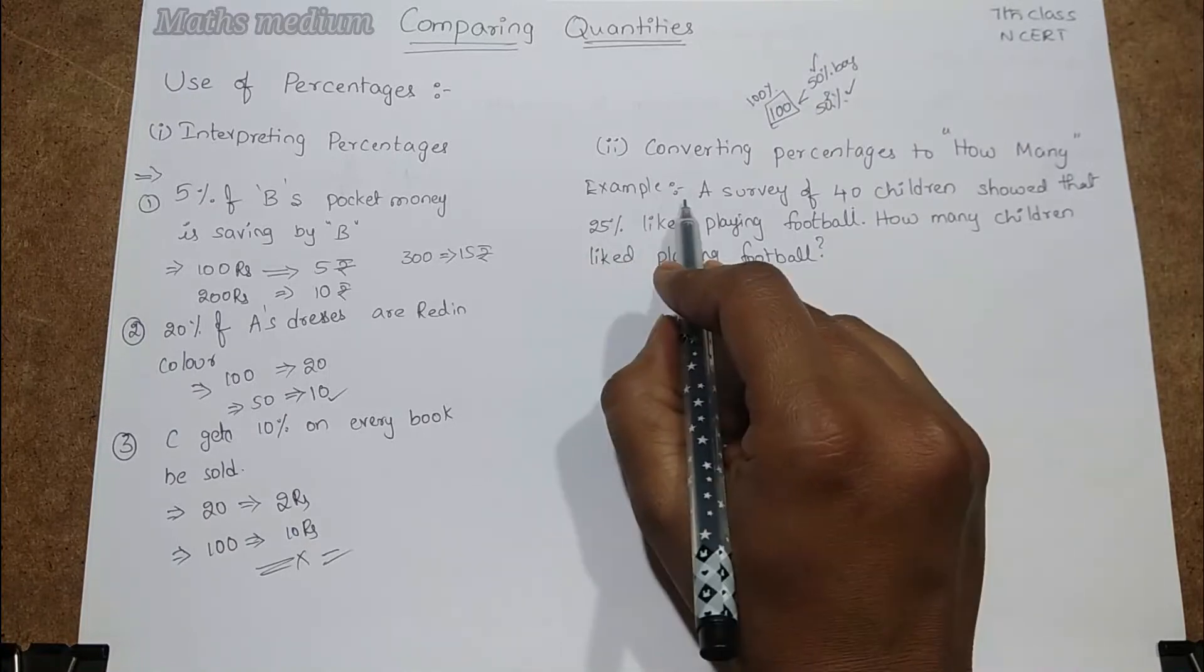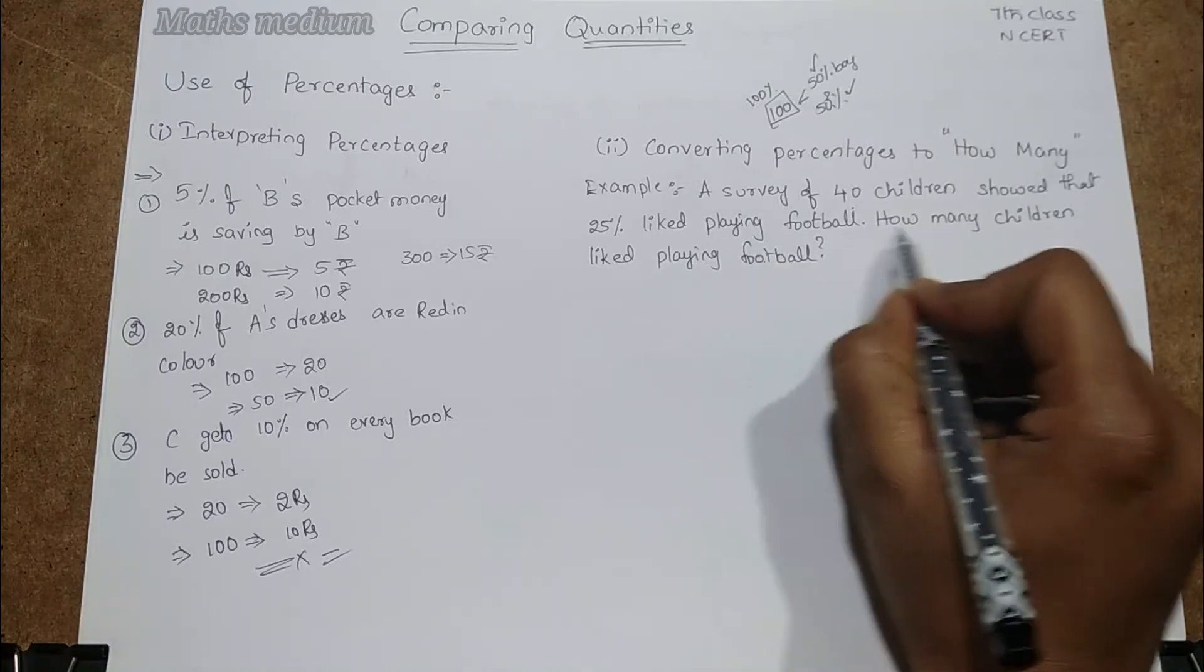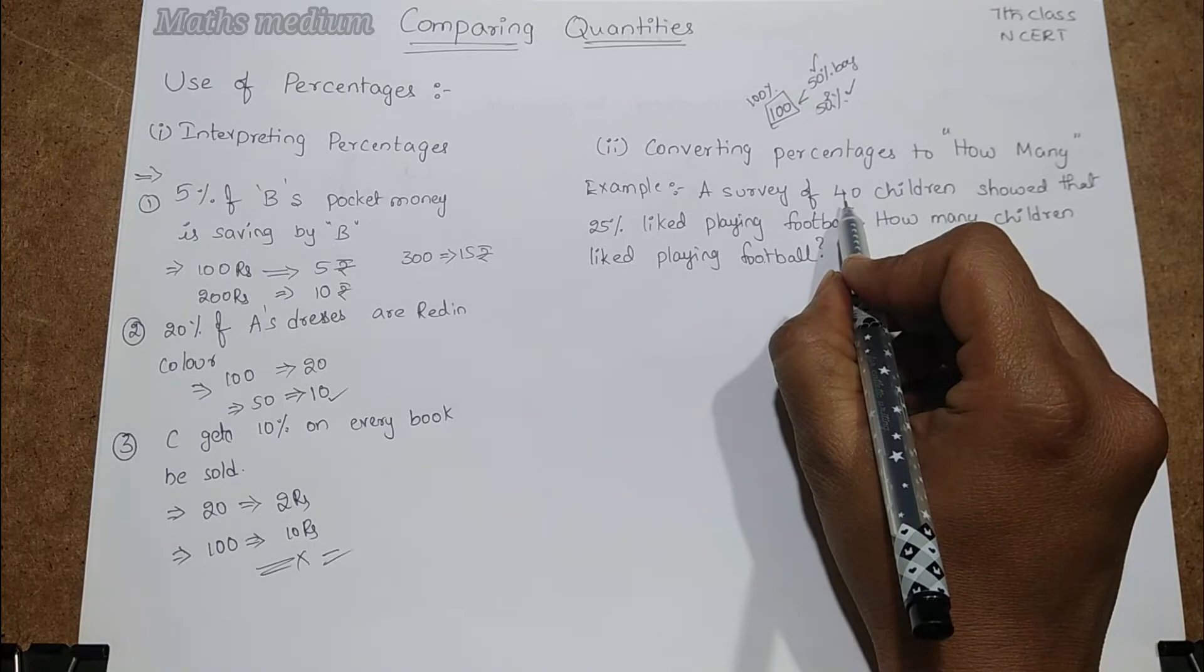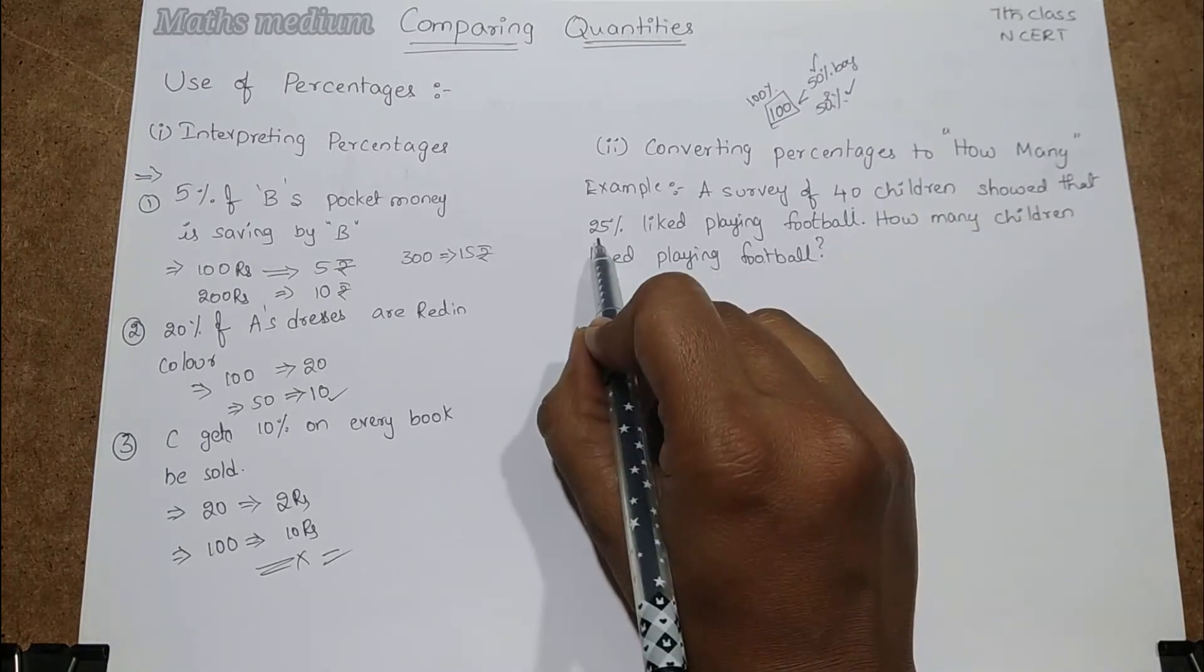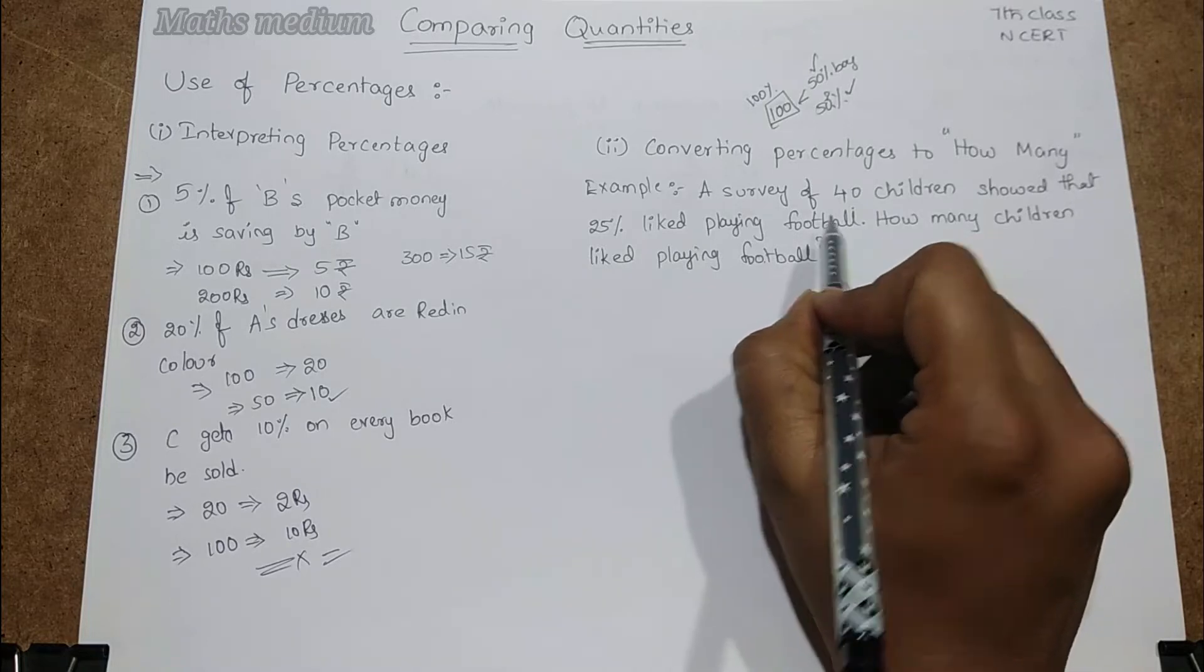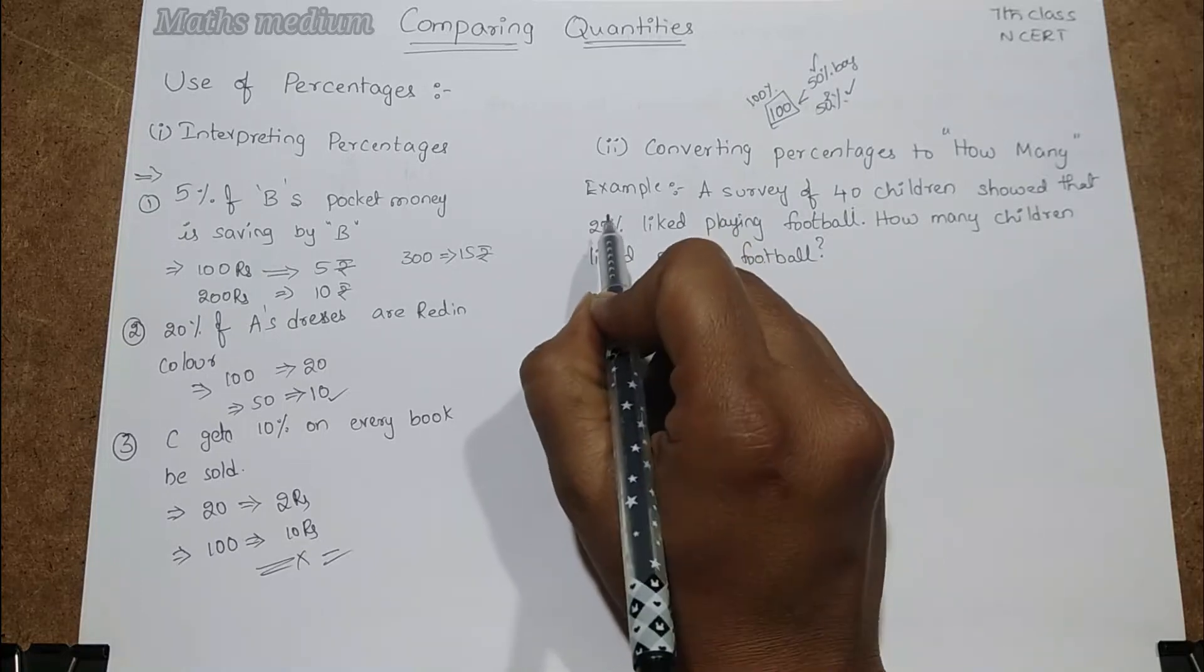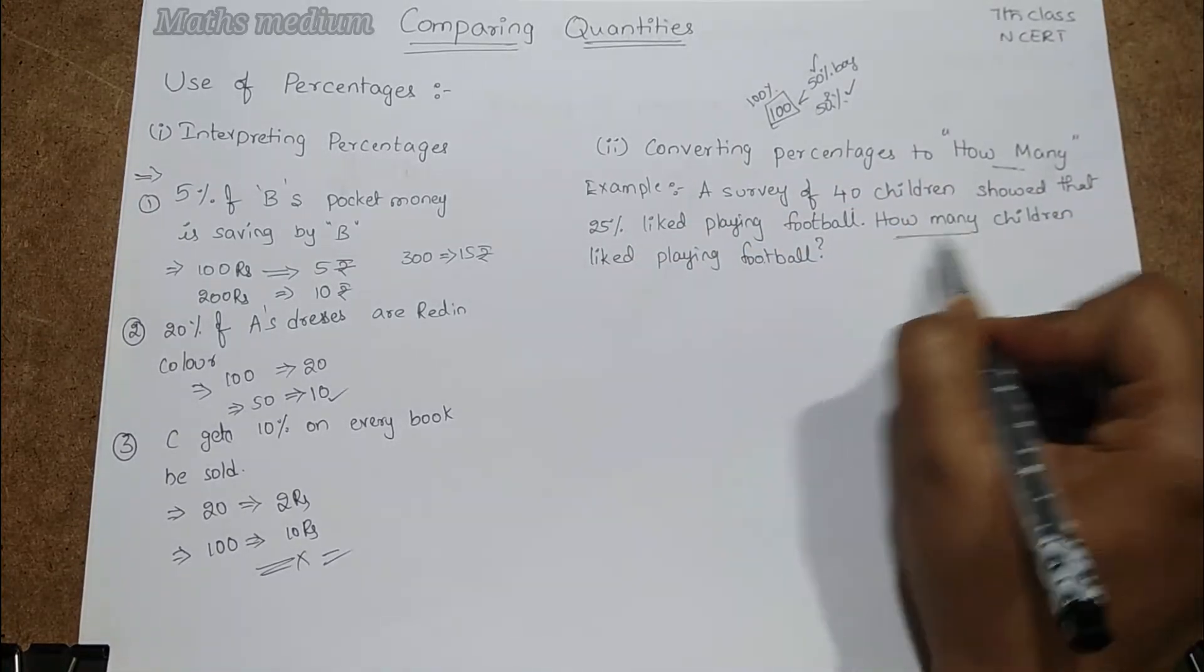See example: a survey of 40 children showed that 25% like playing football. How many children like playing football? Here in one survey 40 children are there. In that 25% children like to play football. We have to find how many children like to play football. Here is percentage but we have to convert this percentage into how many.